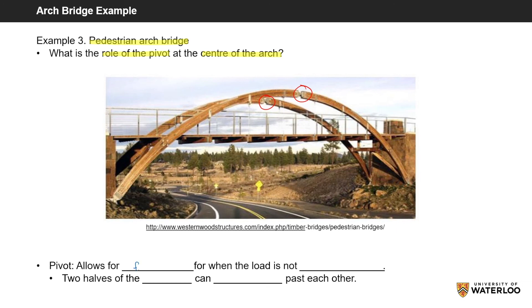The purpose of the pivot is to provide some flexibility in the shape of the arch and allows the two halves of the arch to slide across each other without bending occurring. I have shown this movement with green arrows.